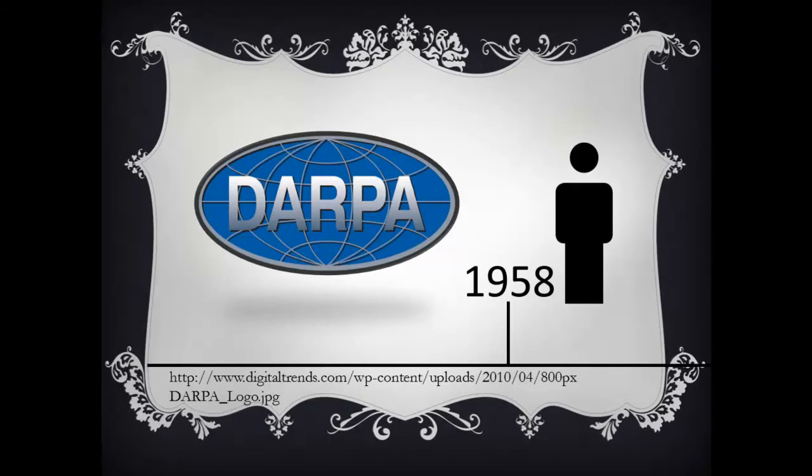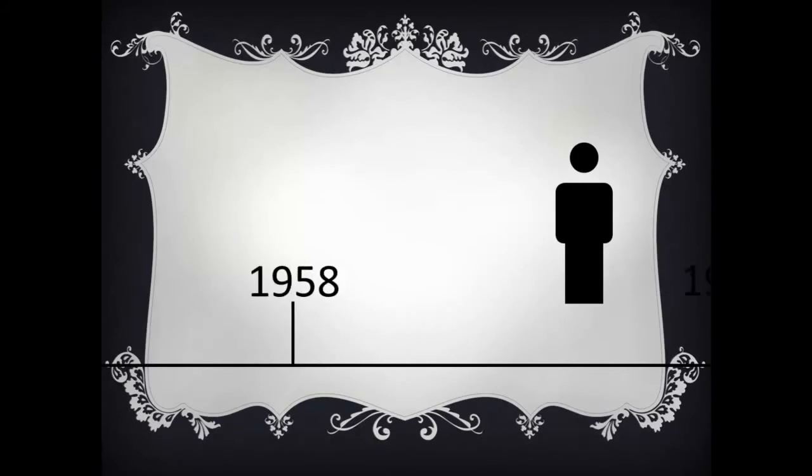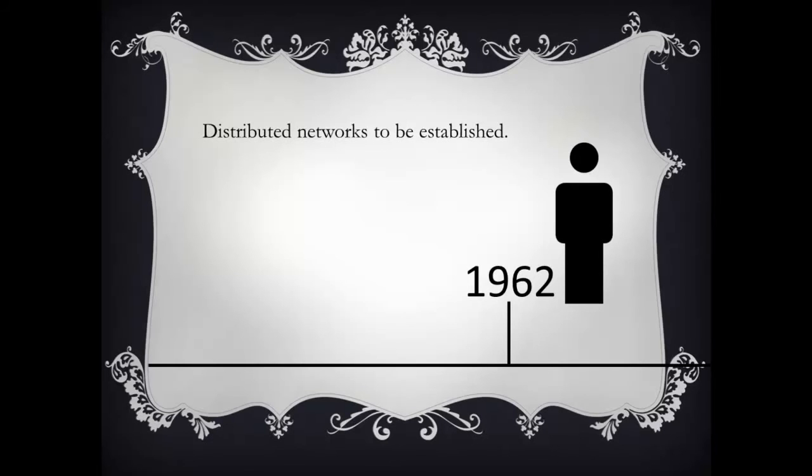The packet switching concept was first invented by Paul Baran in the early 1960s. In 1962, American aircraft discovered missiles in Cuba. At the time there was only centralized architecture, which we know as star topology, so a decentralized network was to be developed. The distributed network was to be used.